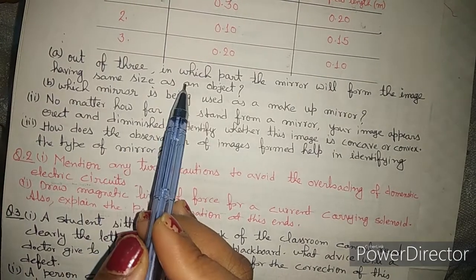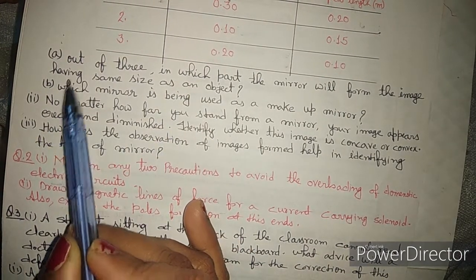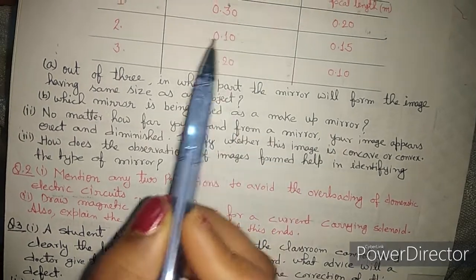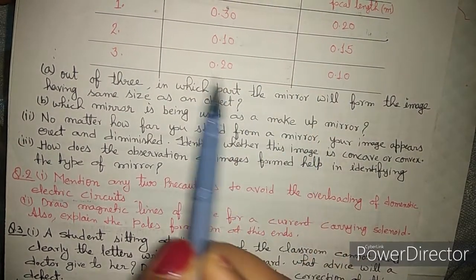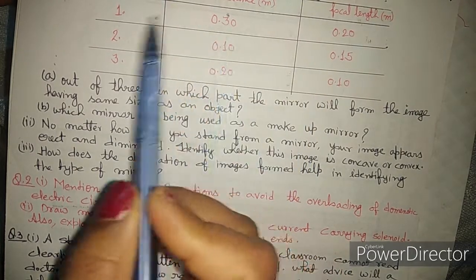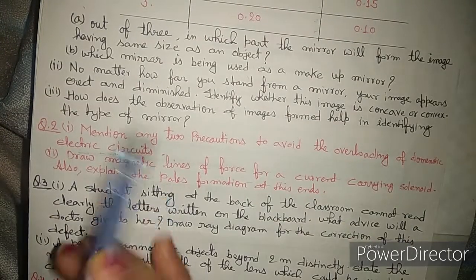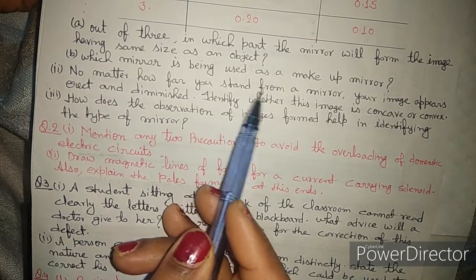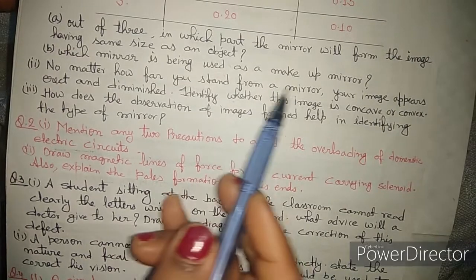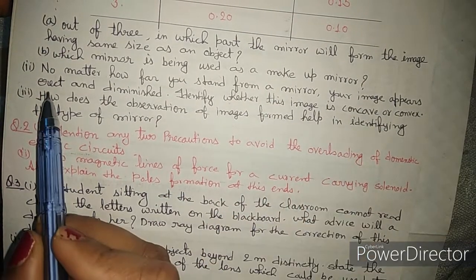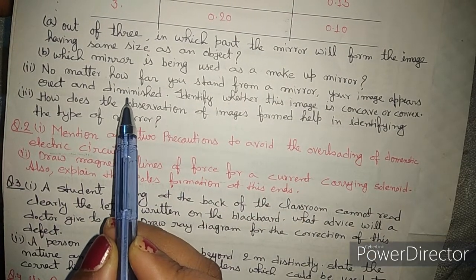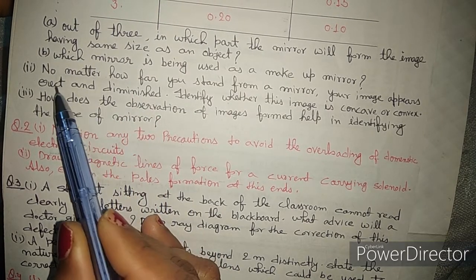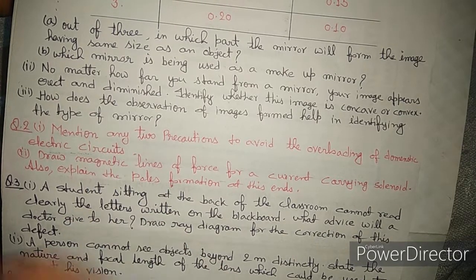The next question asks which mirror is being used as a makeup mirror. For a makeup mirror, you stand far from the mirror and your image appears erect and diminished — meaning the image is virtual and diminished, appearing smaller than the object.